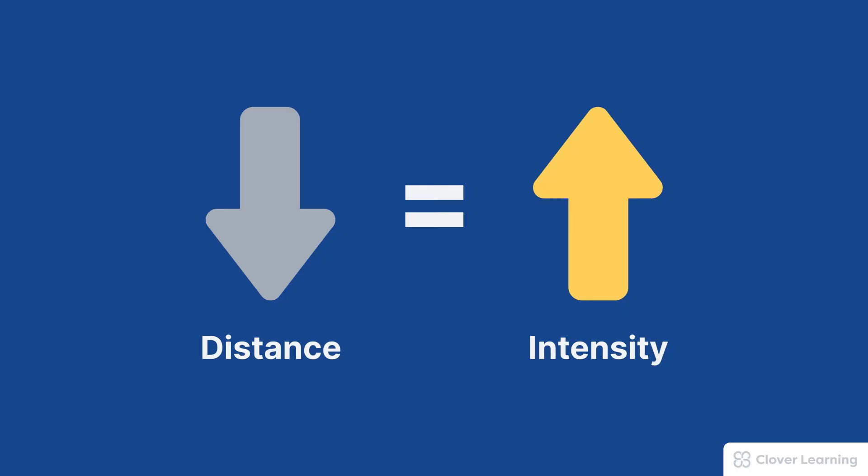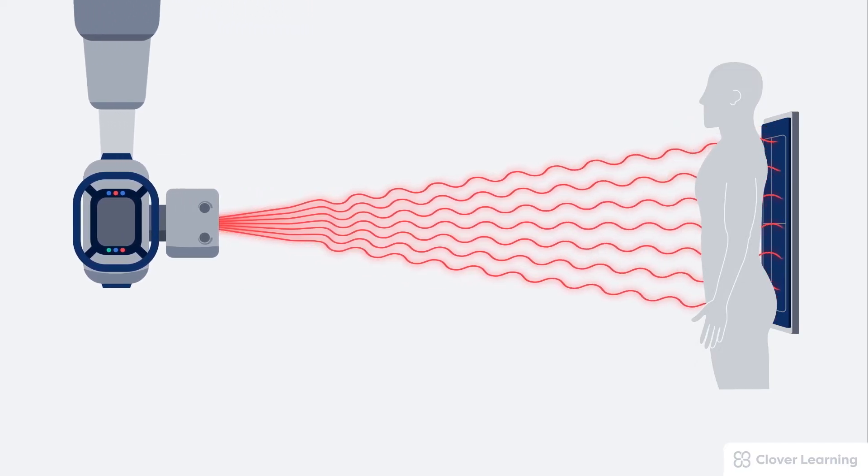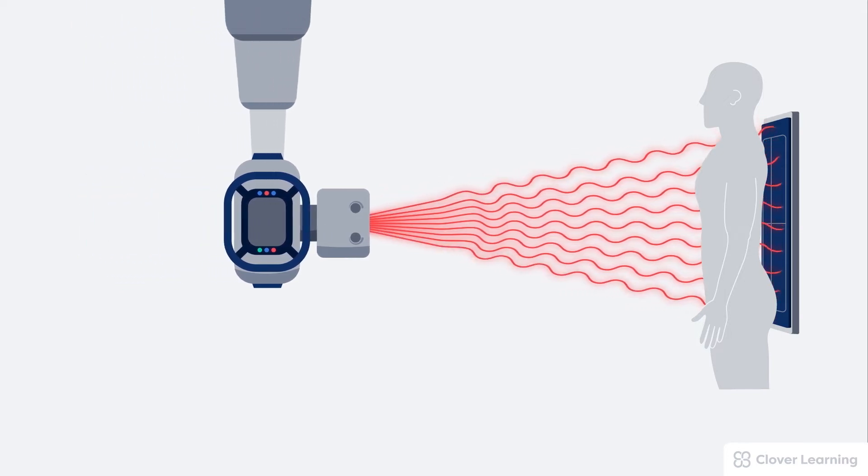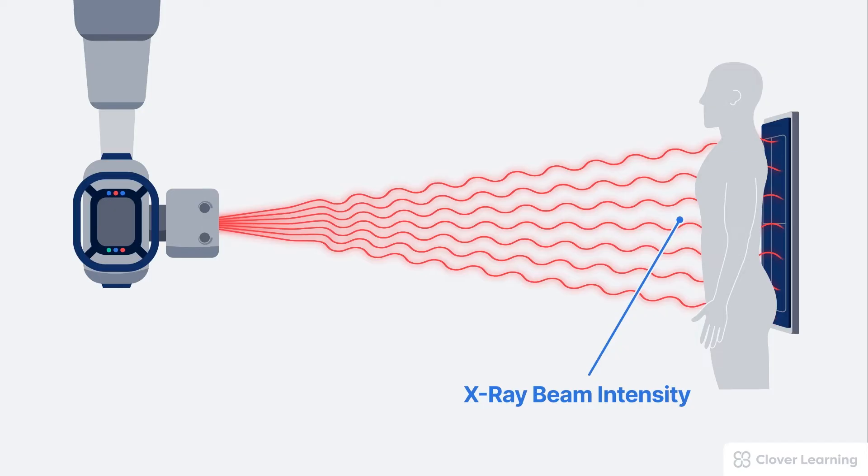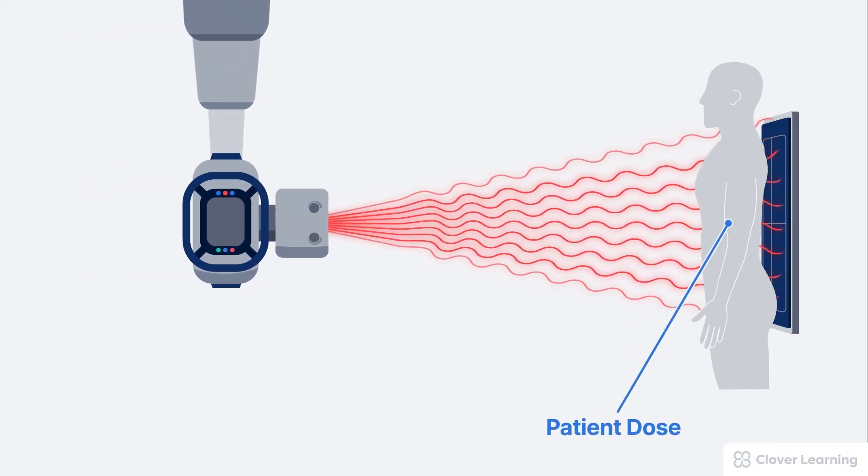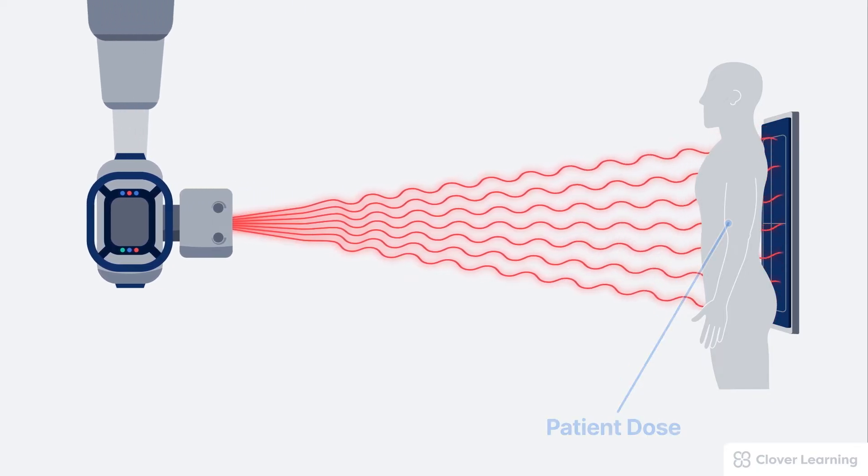The inverse square law affects several aspects of a radiological procedure. Notice that when the X-ray tube position changes, there are several other variables that change: the X-ray beam intensity at the patient is changing, the patient dose changes, and lastly, the receptor exposure is also changing—that's the number of photons striking the image receptor.